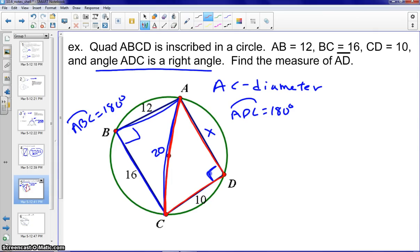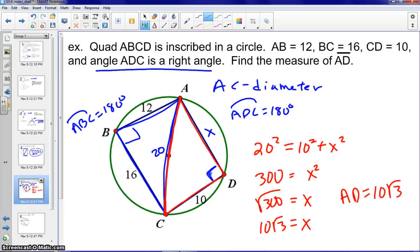And we can use Pythagorean theorem. 20 squared equals 10 squared plus X squared. X squared would be equal to 300. And we will reduce that. Always want to write a simplified exact form if we can. Therefore, AD is equivalent to 10 square root 3.